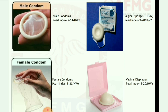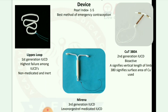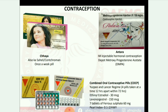Next image shows contraceptive devices: Lipus loop, Marina, and Copper T380A. Next image on contraception: Chaya (also known as Saheli) is a once-a-week pill, a natural and simple method.